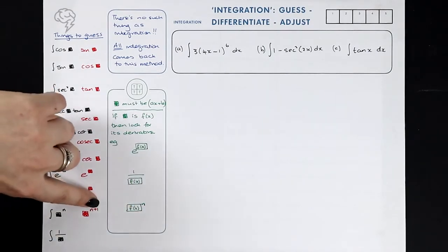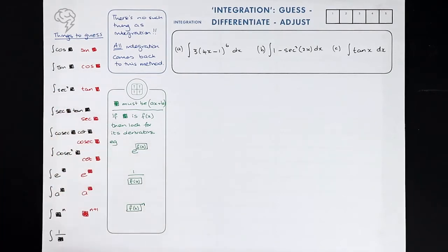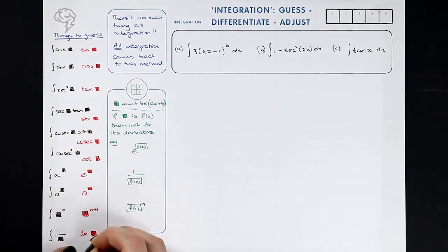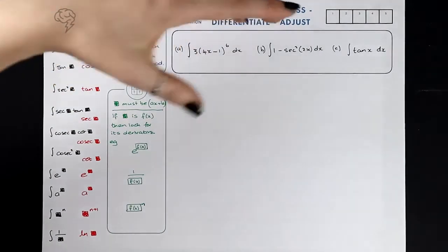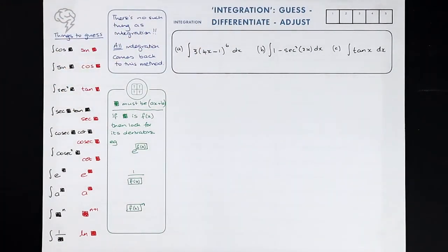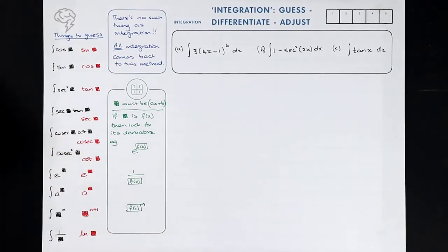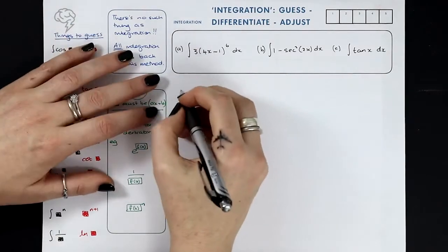What's the guess? Whatever it is, what got differentiated must have been that with one higher power, because when you differentiate the power goes down by one. And this must have come from ln. So what we do first is we guess — we make a big guess about what it was that was differentiated — and then we differentiate and see whether or not we were right. If not, we do a little adjustment.